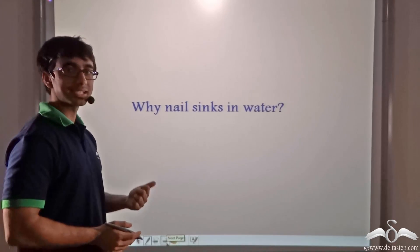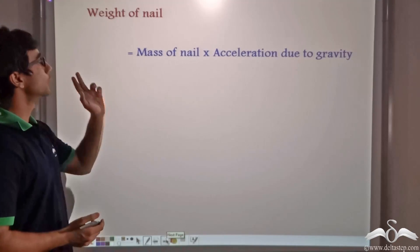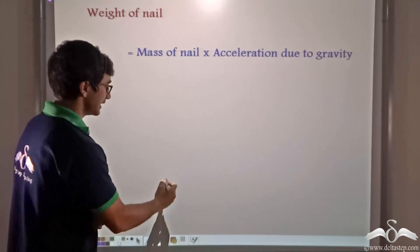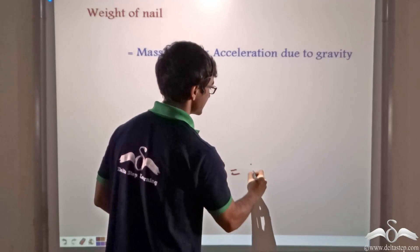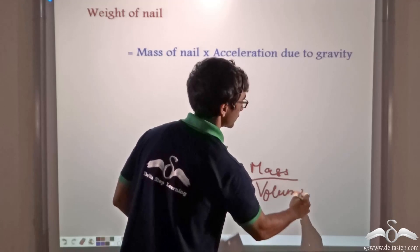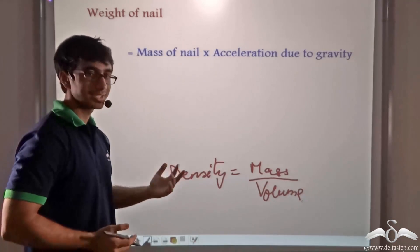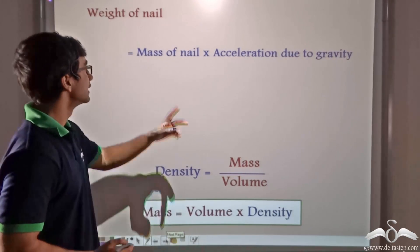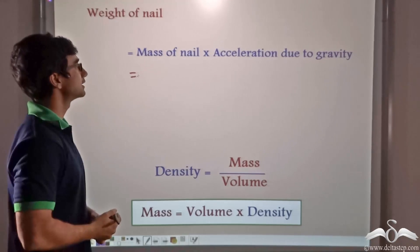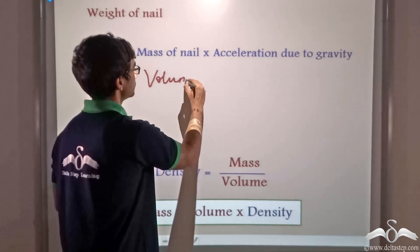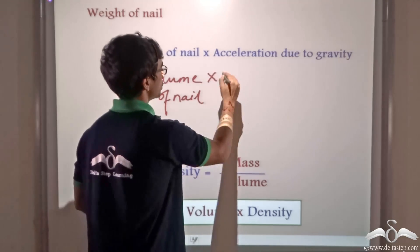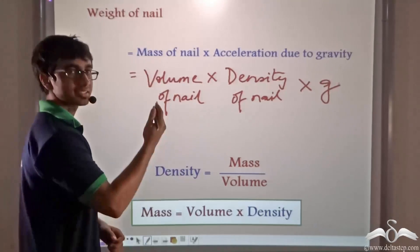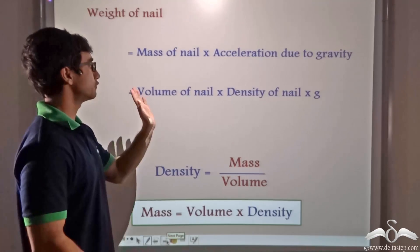So now let us see why a nail kept in water sinks. We consider the weight of the nail, which is the mass of the nail multiplied by acceleration due to gravity. Now since the density of any substance can be expressed as mass divided by volume, we can rearrange to write mass as density multiplied by volume. Thus the weight of the nail equals volume of the nail multiplied by density of nail multiplied by g — that is acceleration due to gravity.